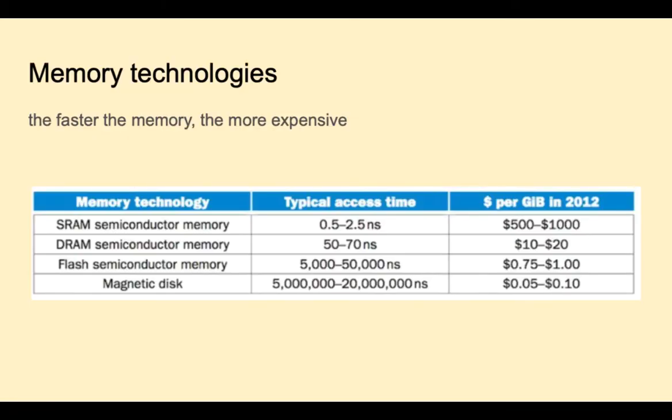This table shows the difference in access time and cost for the four different main types of memory storage. Magnetic disk is the slowest with access times 5 to 20 million nanoseconds, but it's also the cheapest, as low as 5 cents per gigabit. Next is flash memory in the range of 5 to 50,000 nanoseconds at up to 10 times the cost.